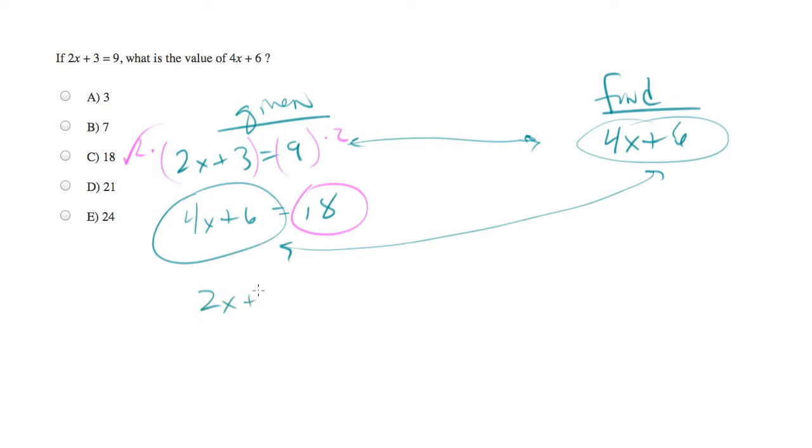We have 2x plus 3 equals 9. Let's subtract 3 from both sides. And you end up with 2x equals 6. Divide both sides by 2.